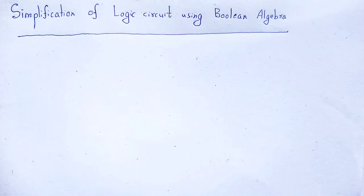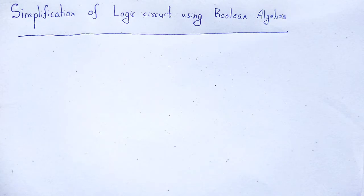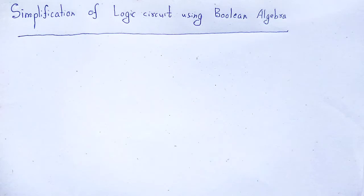Why is it important to simplify a logic circuit? As we know, a logic circuit should have a minimum number of hardware elements in order to minimize the space and reduce its cost. For every logic circuit we can get a simple or complicated Boolean expression. A complicated Boolean expression can be simplified and minimized using the properties, laws, and theorems of Boolean algebra.